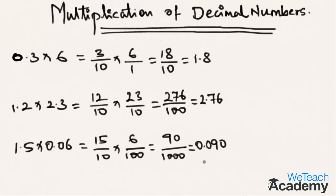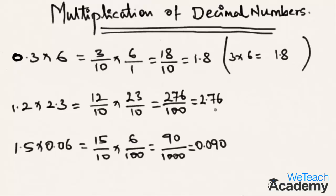So in simple terms, you can solve this multiplication as 3 times 6, which is 18, then place the decimal point one digit from the left — giving 1.8. Now in the same way, for the second example, 12 multiplied by 23 is 276.